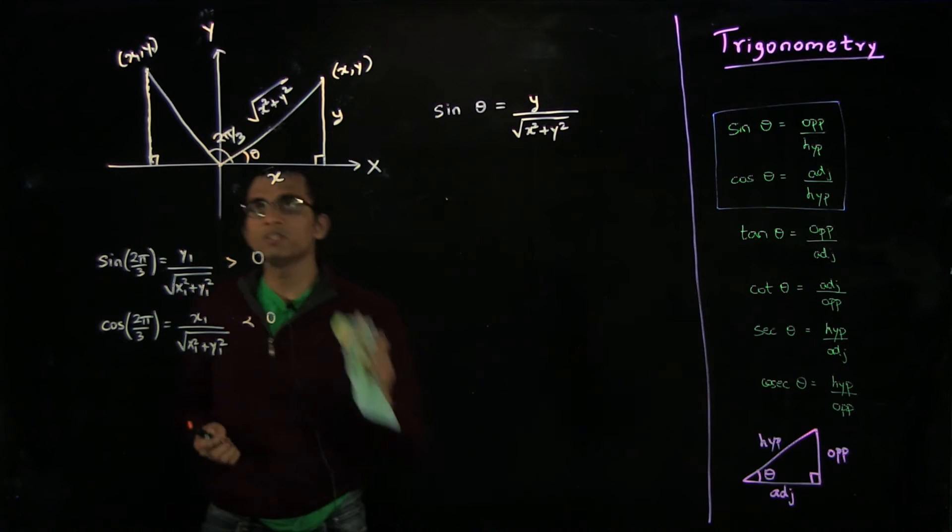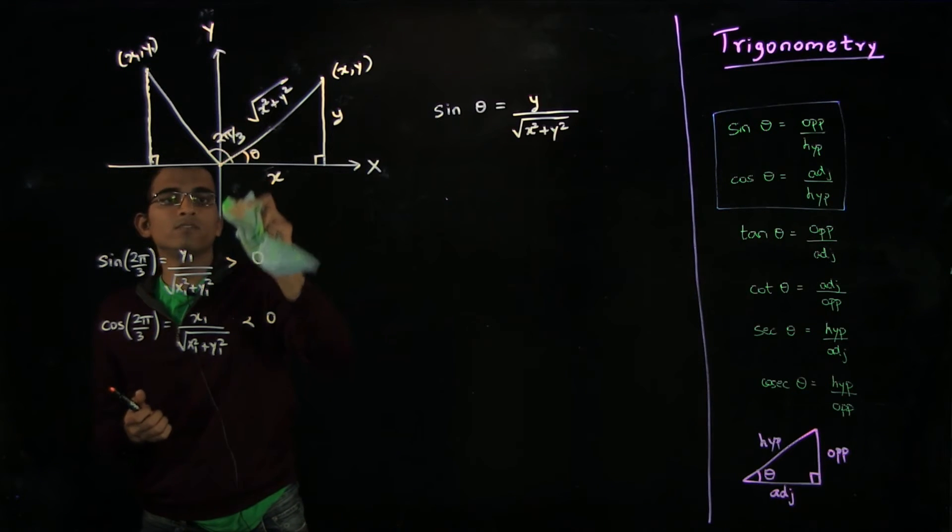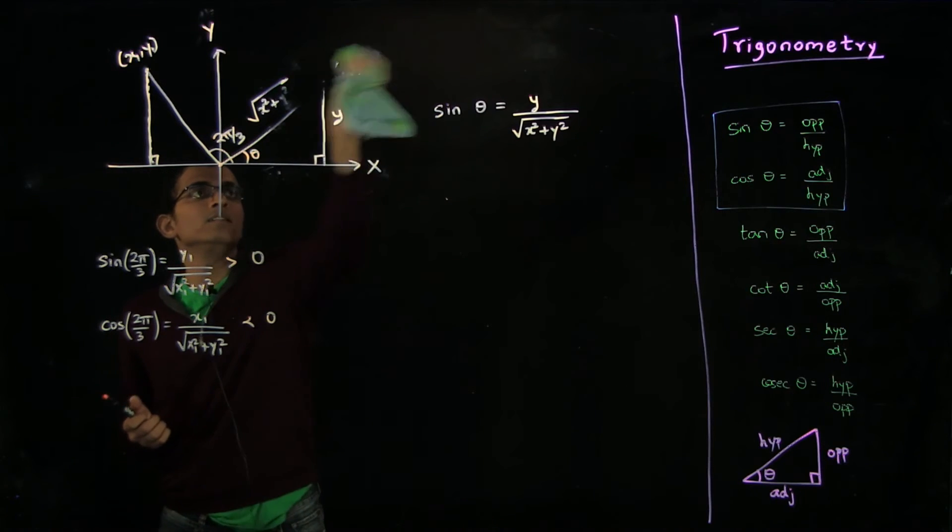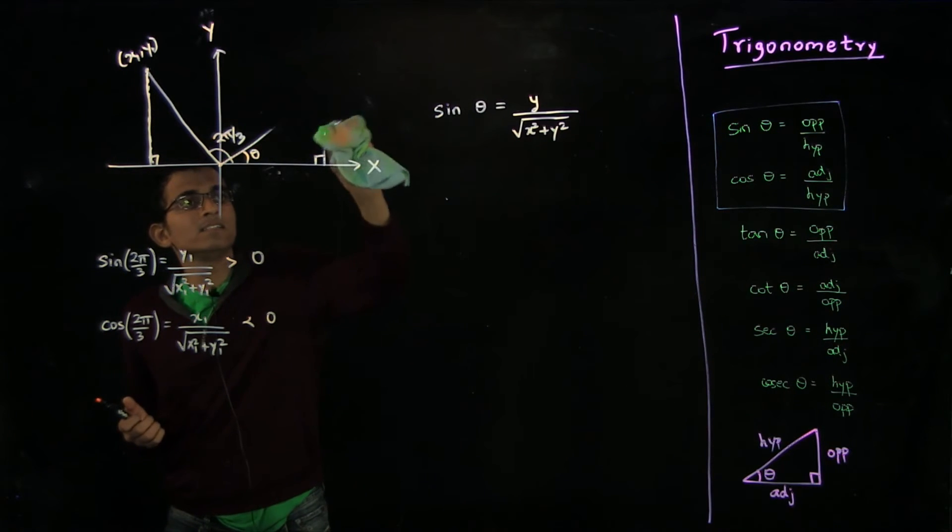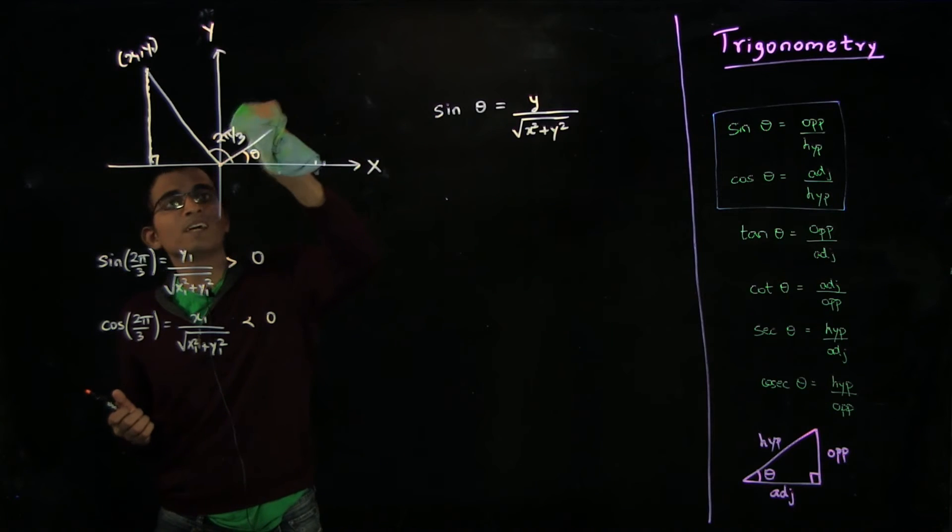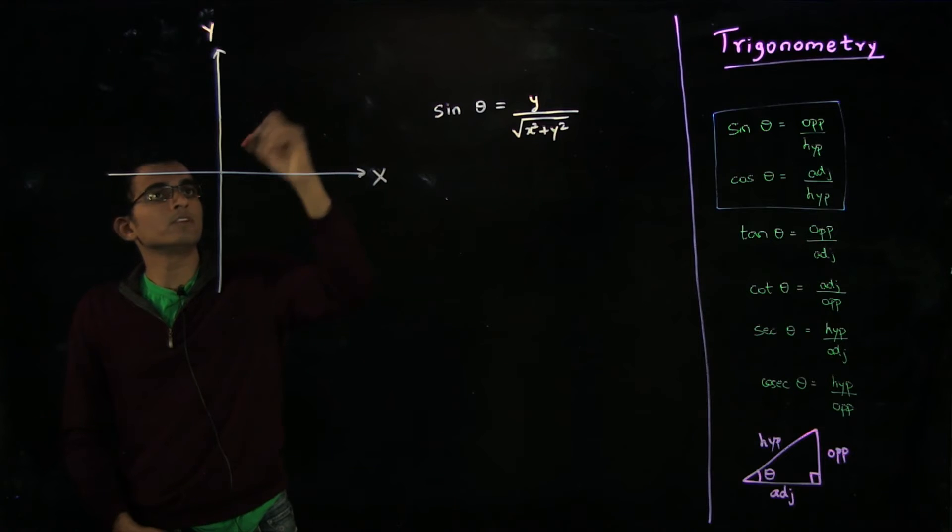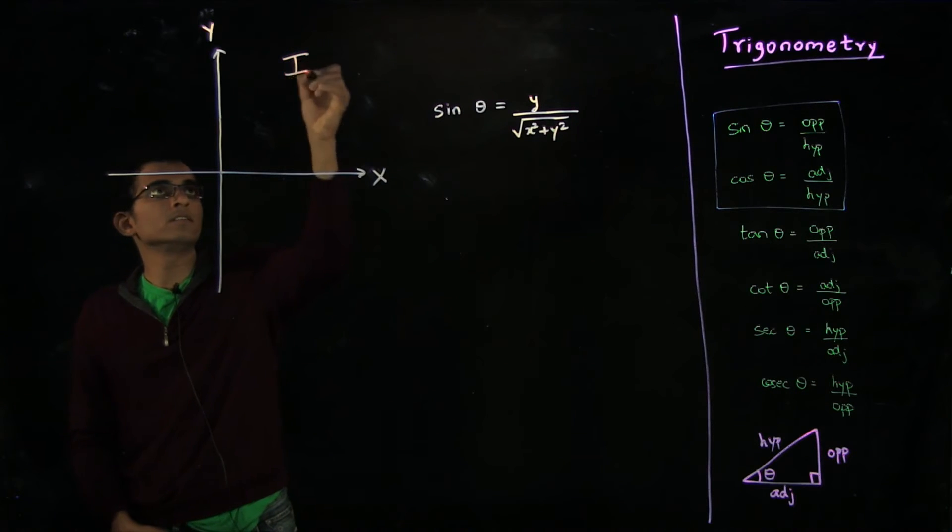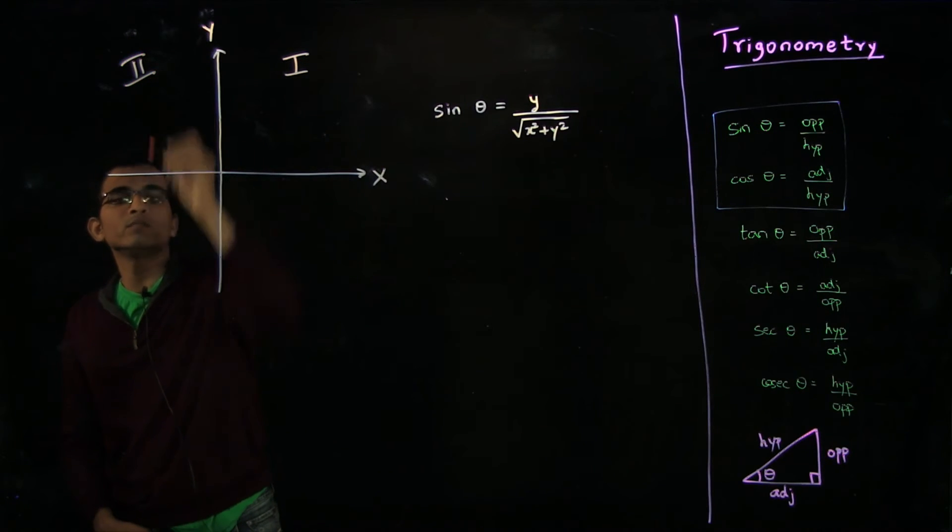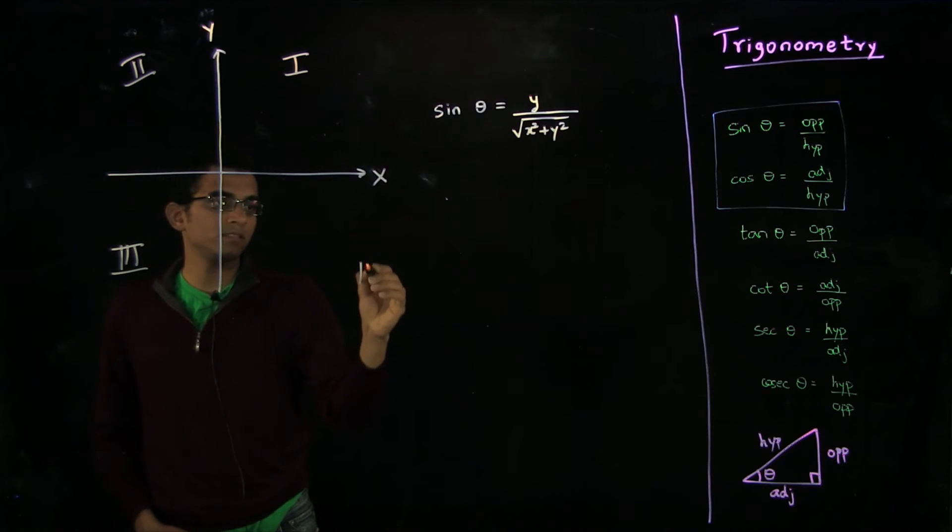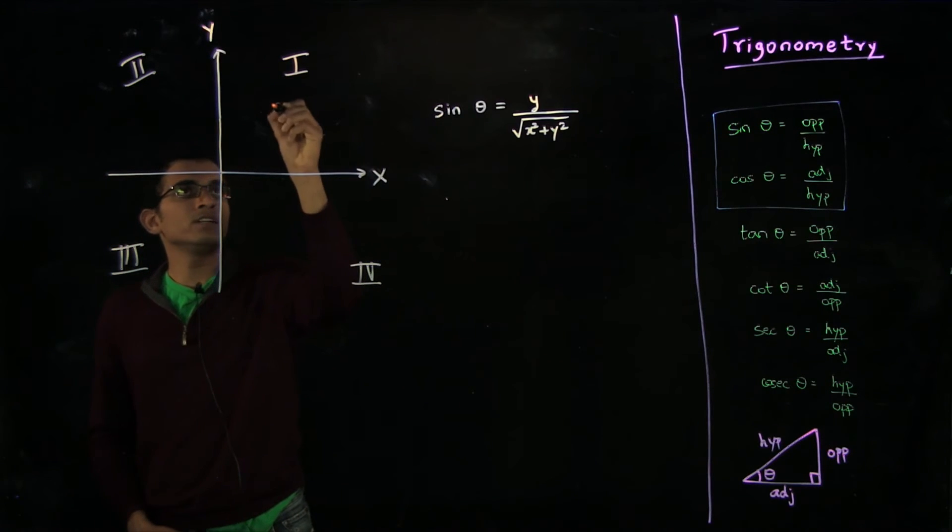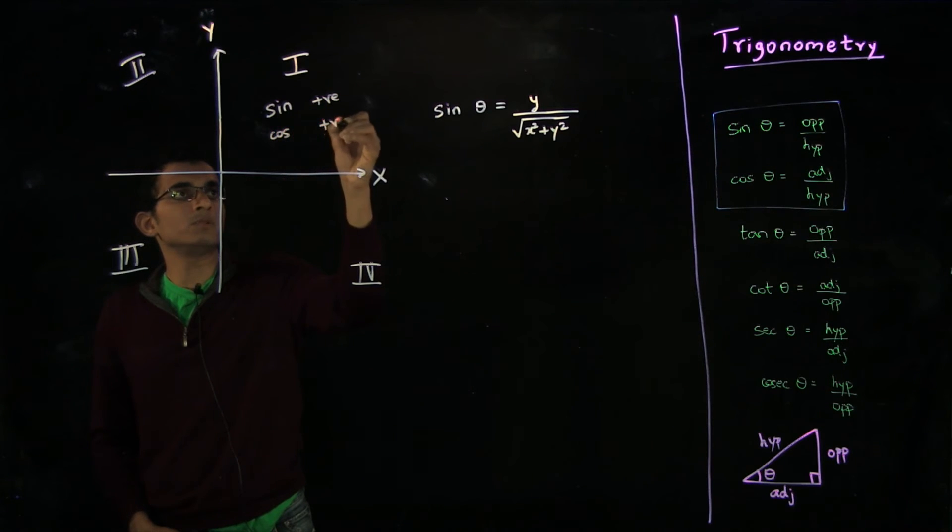So in general, it will be useful to think of the coordinate system and know the signs of the sines and cosines of angles. If we are in the first quadrant, second quadrant, this is the third quadrant, this is the fourth quadrant. Here in this quadrant, sine of the angle will be positive and the cosine will also be positive.